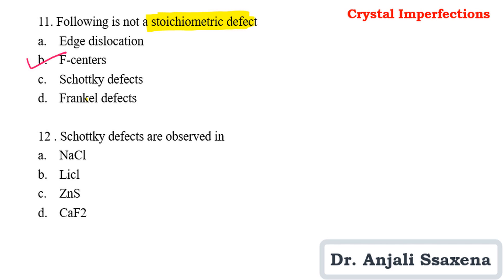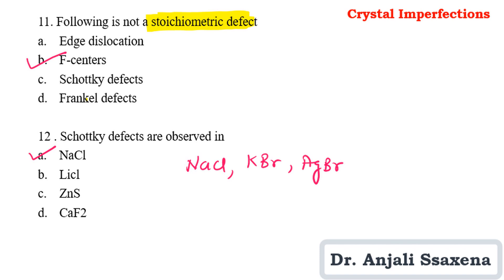Question 12: Schottky defects are observed in NaCl, LiCl, ZnS, or CaF₂? Schottky defects are observed in NaCl and KBr. ZnS and CaF₂ show Frenkel defect, not Schottky defect. AgBr is also associated with Schottky defect.